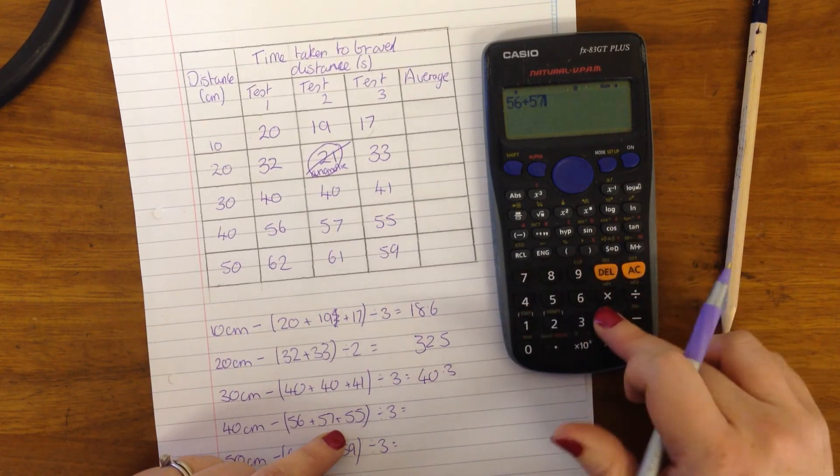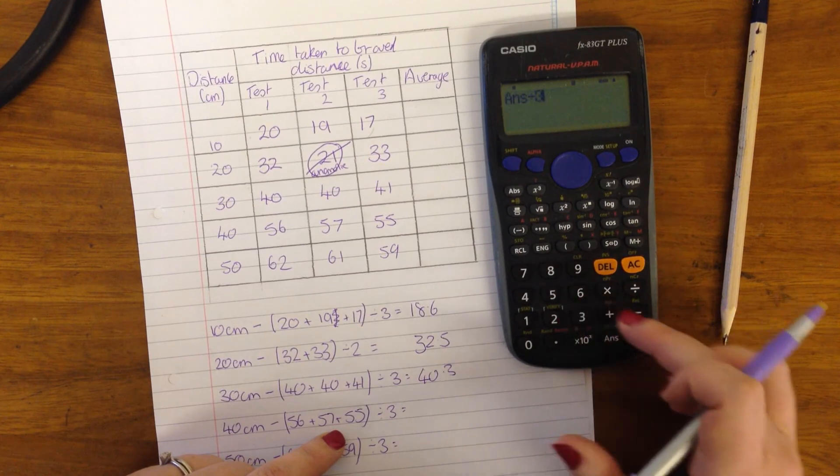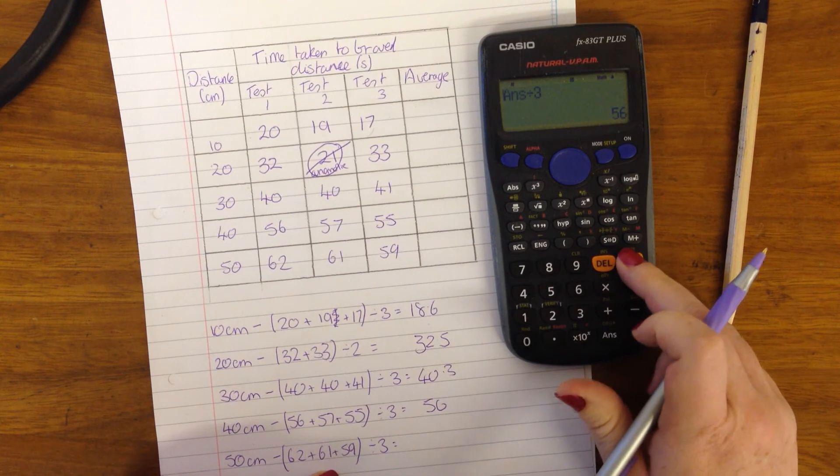56 plus 57 plus 55. Hitting that equals again. Divided by 3 equals 56. Again, that's close, I'm happy with that number.